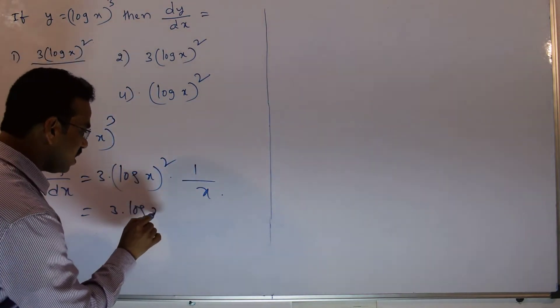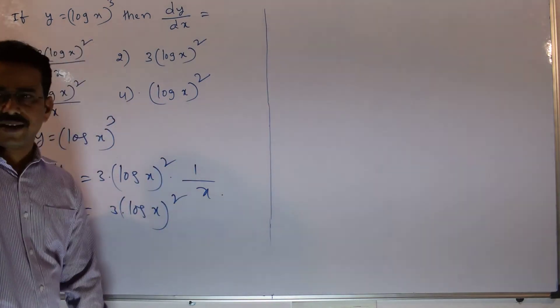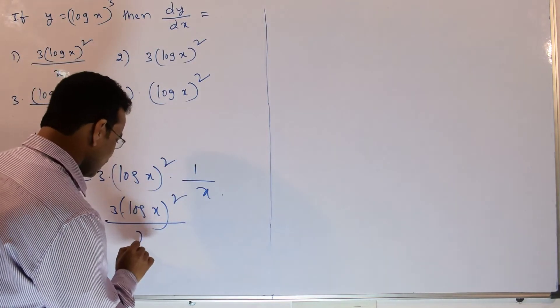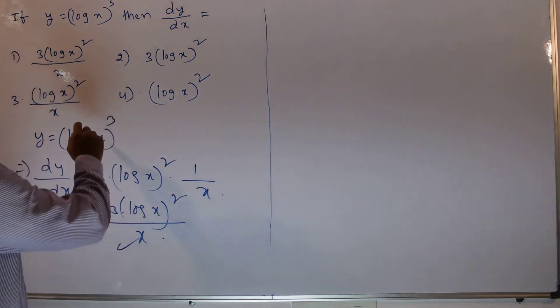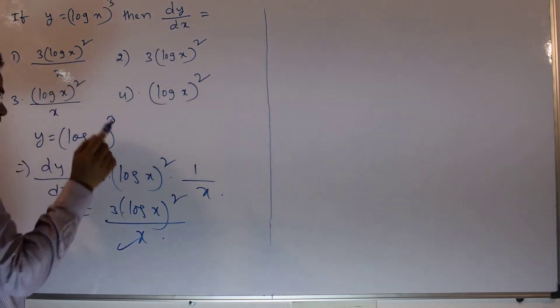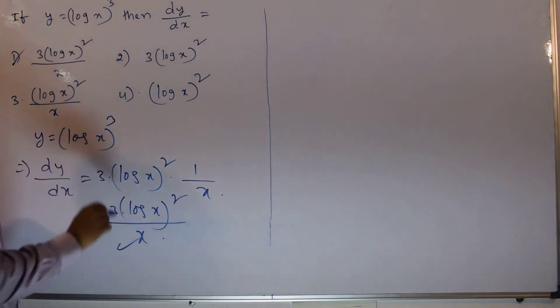So finally we are getting 3 into log x whole square by x. This is the final answer. Let's compare with the available options. The first option is 3 into log x whole square by x - exactly, this is correct. The rest of the options are incorrect.